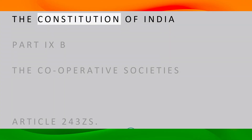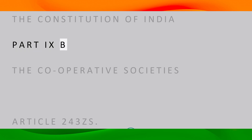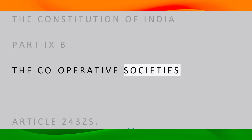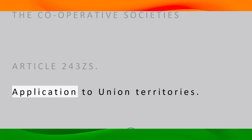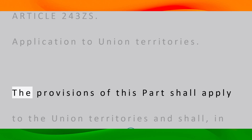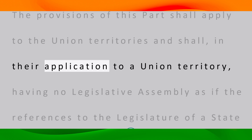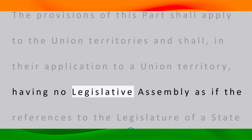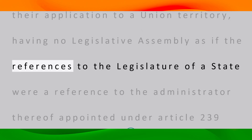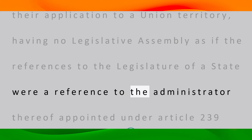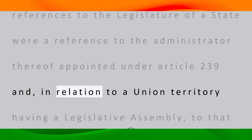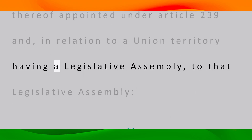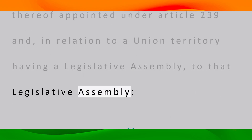The Constitution of India, Part 9B — The Cooperative Societies. Article 243ZS: Application to Union Territories. The provisions of this Part shall apply to the union territories and shall, in their application to a union territory having no legislative assembly, be as if the references to the legislature of a state were a reference to the administrator thereof appointed under Article 239, and in relation to a union territory having a legislative assembly, to that legislative assembly.